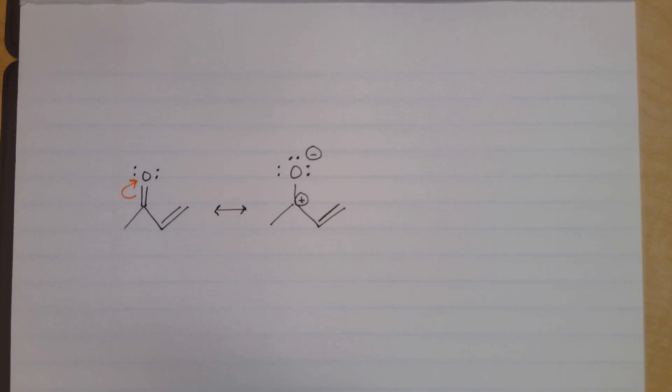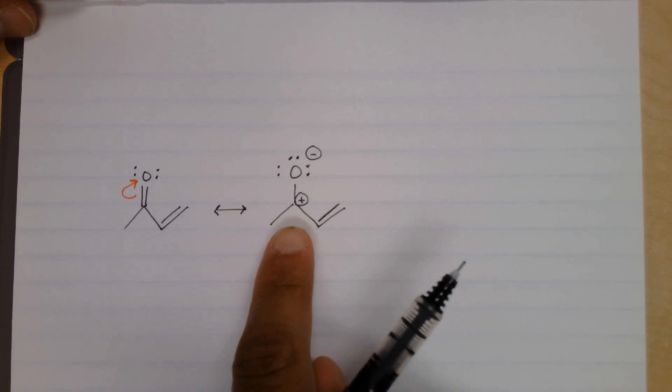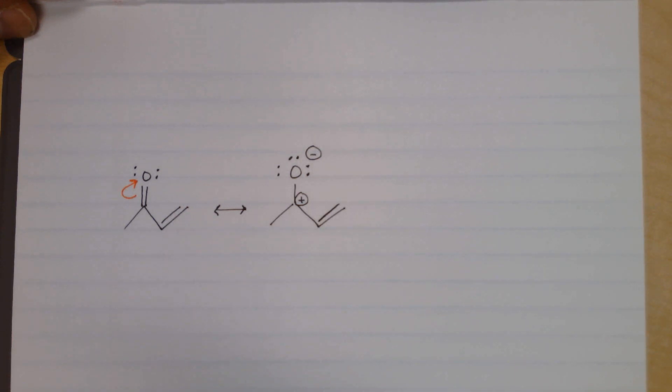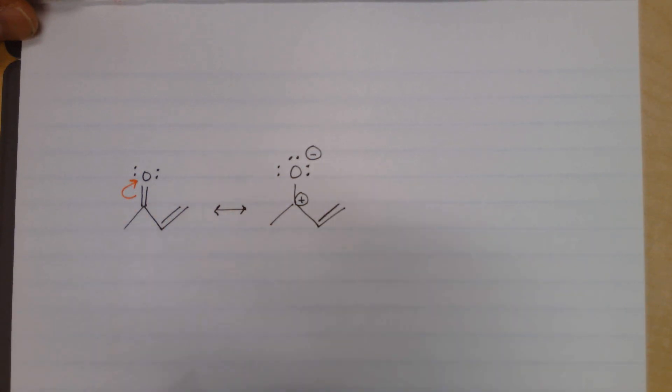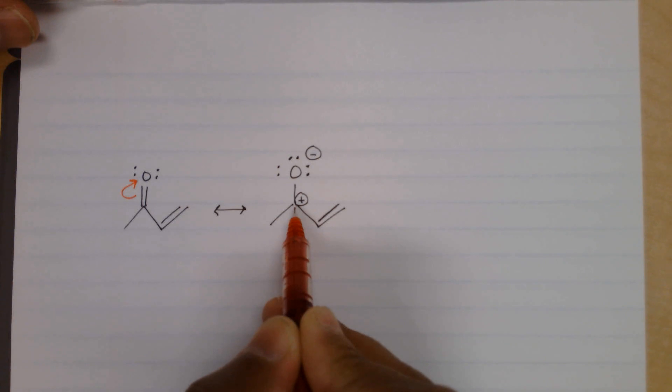So notice by moving the pi electrons we have a new structure. In the new structure we have an allylic positive charge. So here's your double bonded carbon, that's an sp2 carbon, and one atom away is the allylic position. That carbon has a positive charge.